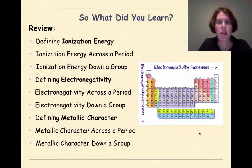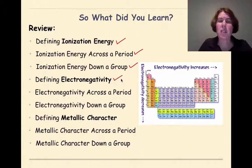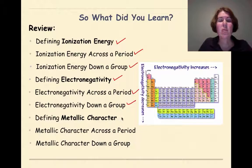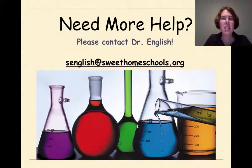So what did we learn in this tutorial? We covered quite a bit. We went over the definition of ionization energy and talked about the trends of ionization energy across a period and down a group. Then we talked about the general definition of electronegativity and the trend across a period and down a group. And finally we talked about metallic character and the trends across a period and down a group. Need more help? Please feel free to contact me. Have a great day, we'll see you next time.